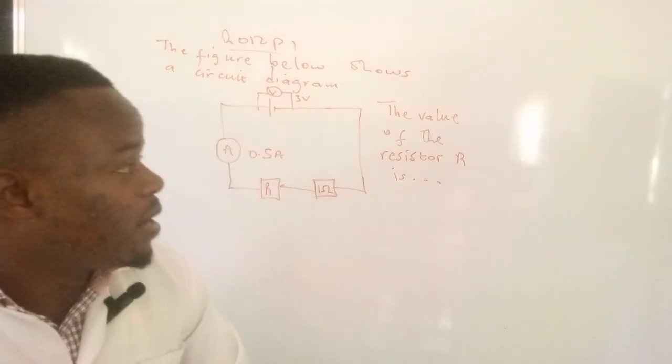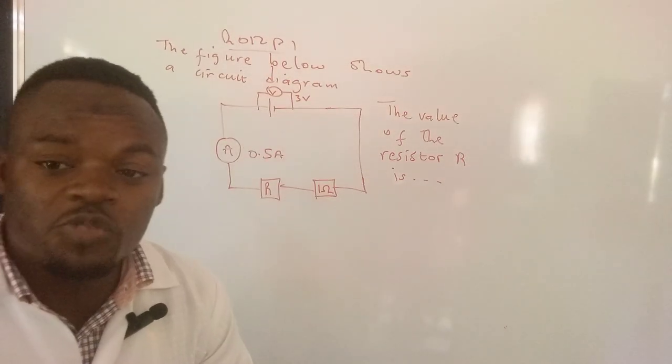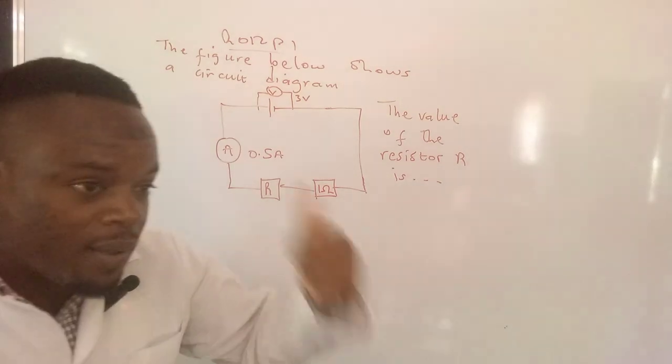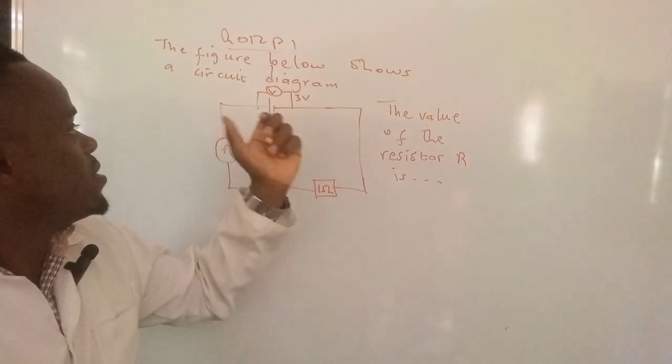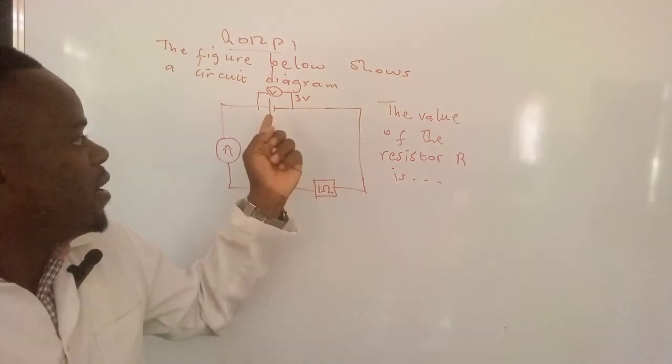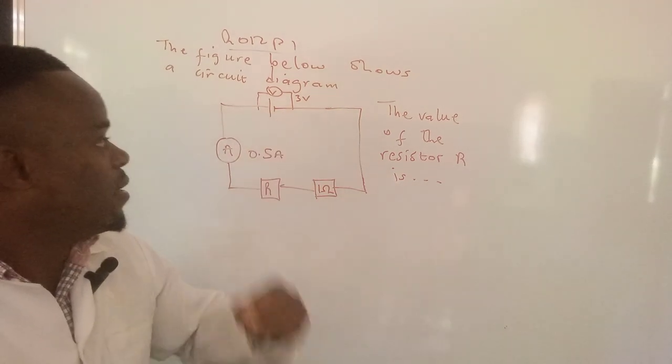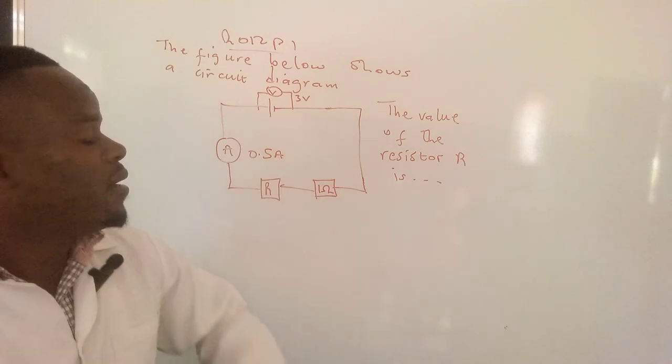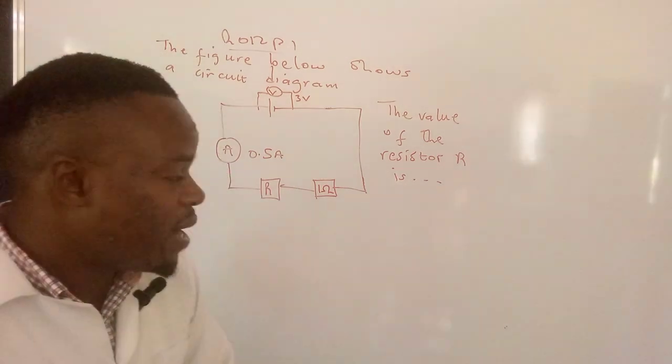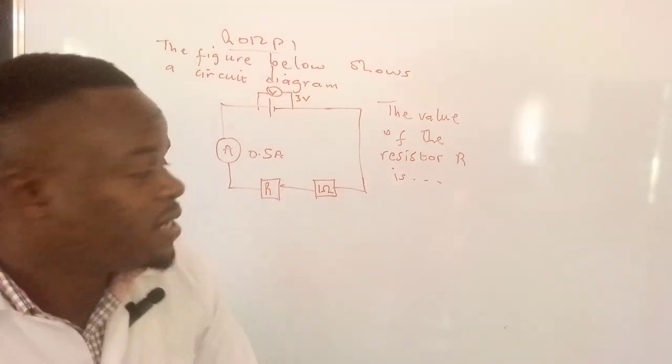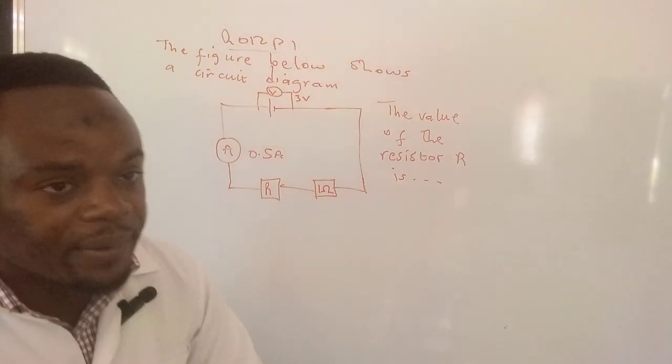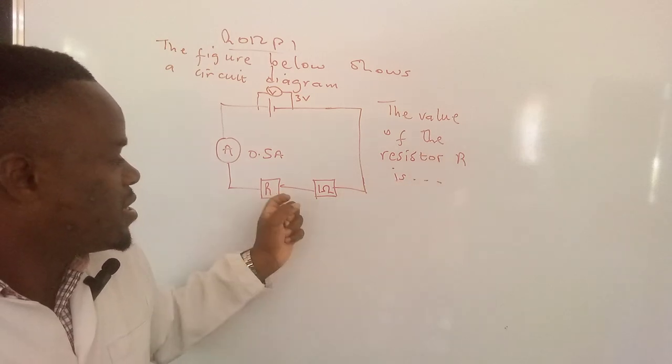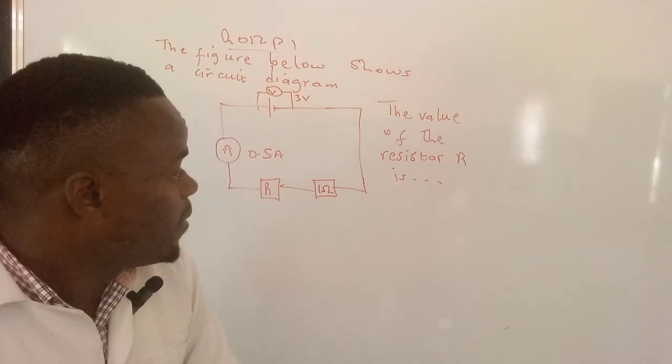Without any further ado, let's get into things. We have a problem here which was extracted from one of the past papers, science paper 1, 2012. The problem reads: the figure below shows a circuit diagram. We have the potential difference across the battery which is 3 volts. Here we have an ammeter with the reading 0.5 amperes. You also have this resistor whose value isn't yet known, then we have that other one whose value is one ohm. So the question is, what's the value of the resistor?